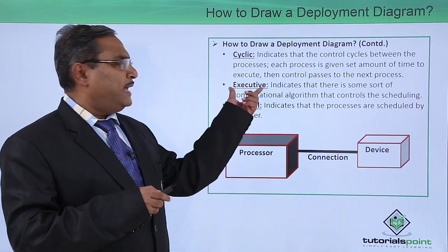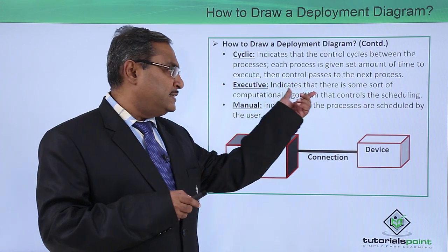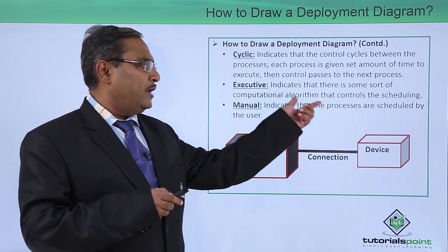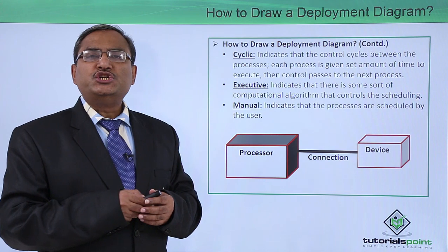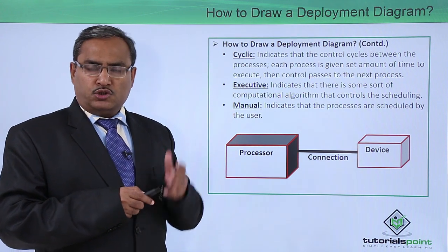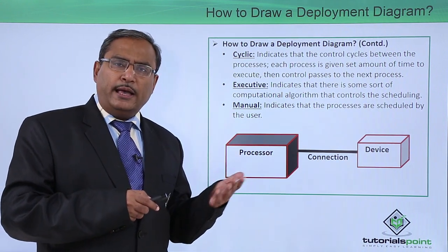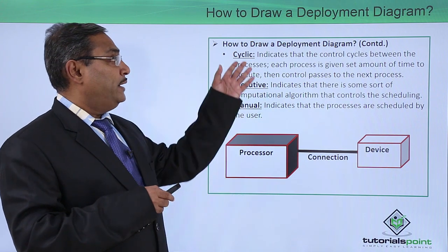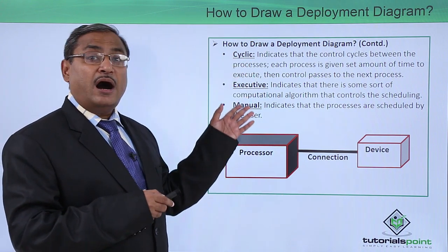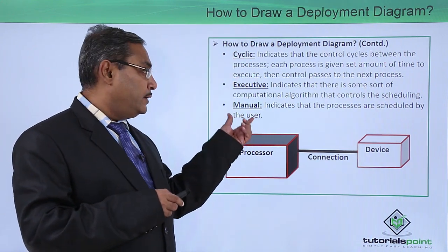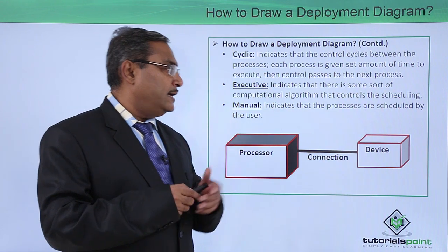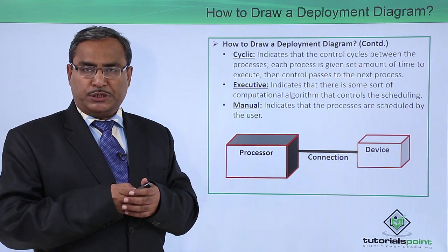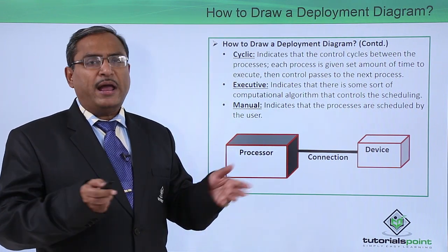The next scheduling type is executive, which indicates that there is some sort of computational algorithm that controls the scheduling — along with preemptive and non-preemptive, this represents another scheduling criteria. Manual scheduling indicates that processes are scheduled by the user on a manual basis.